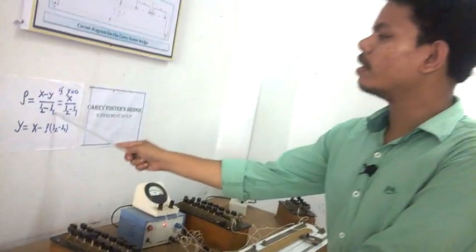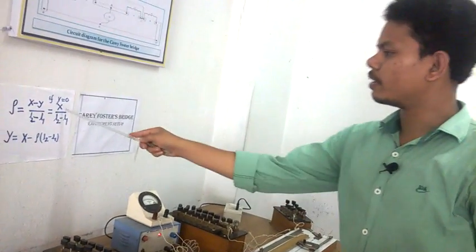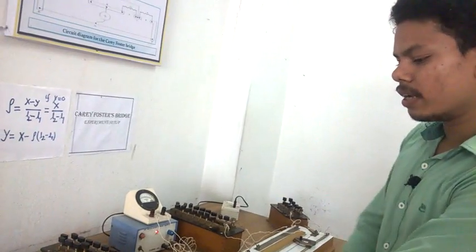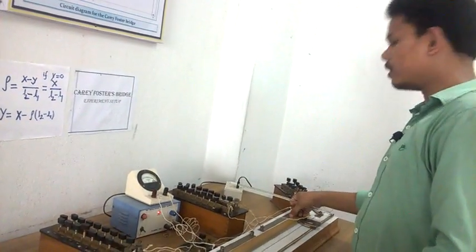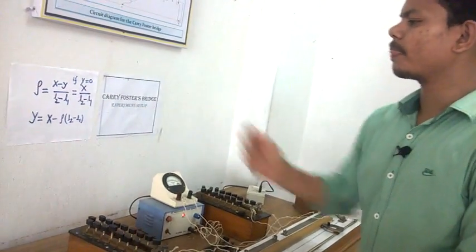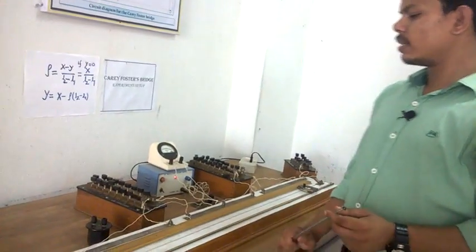Putting the value of L2 and L1 we get rho. In this case our Ax equals 0.5, L1 equals in the previous case we get 14 and L2 equals 89 so we get rho. This is the first part. Second part is to find out the y, y is the unknown resistance.